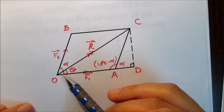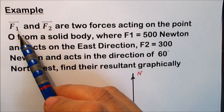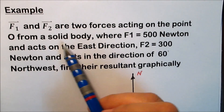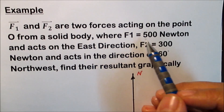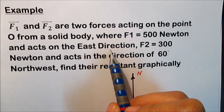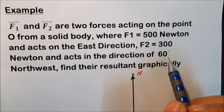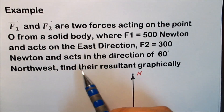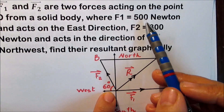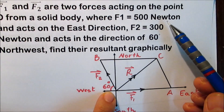To understand how to find the resultant of two forces graphically, let's look at this example. F1 and F2 are two forces acting on point O of a solid body, where F1 is 500 newtons acting in the east direction, and F2 is 300 newtons acting in the direction 60 degrees northwest. We need to find the resultant graphically by representing F1 and F2 as the two sides of a parallelogram using a suitable scale.